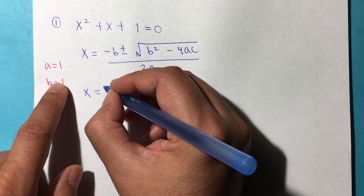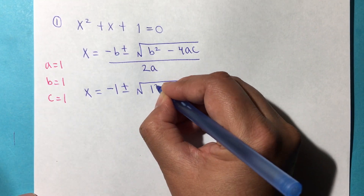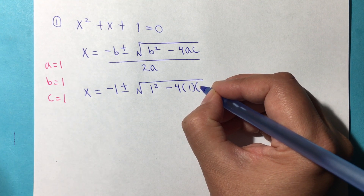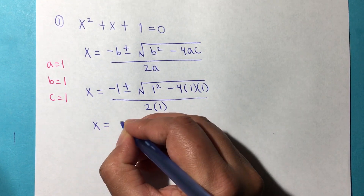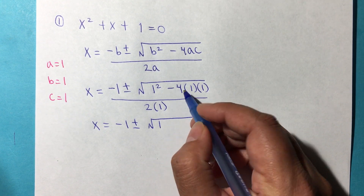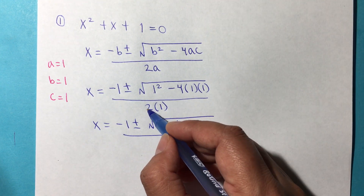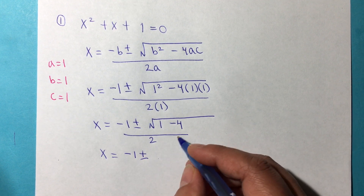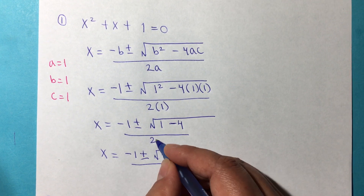So x is equal to negative b. Negative from the formula — b is 1 — plus or minus the square root of b squared, meaning 1 squared, minus 4 times a, which is 1, times c, which is 1, divided by 2 times a, which is 1. And so this is negative 1 plus or minus the square root of 1 squared, which means 1. And then negative 4 times 1 is negative 4. So negative 1 plus or minus the square root of 1 minus 4 is negative 3, divided by 2.